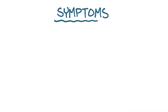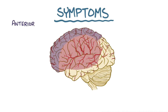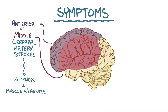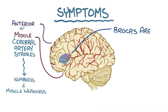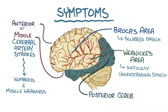Stroke symptoms depend on the exact part of the brain that is affected. For example, an anterior or middle cerebral artery stroke can cause numbness and sudden muscle weakness. If a stroke affects Broca's area, which is usually in the left frontal lobe, or Wernicke's area, which is usually in the left temporal lobe, then it can cause slurred speech or difficulties understanding speech respectively. If there's a posterior cerebral artery stroke, then it can affect vision.